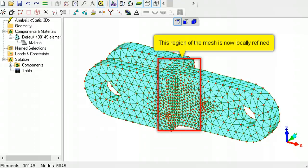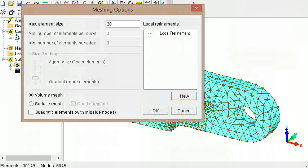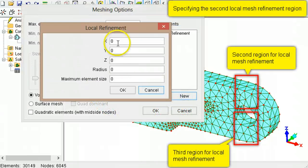The AUTA mesher will use the bounding volume of the existing mesh to create a completely new mesh. You can add multiple local refinements to the model.